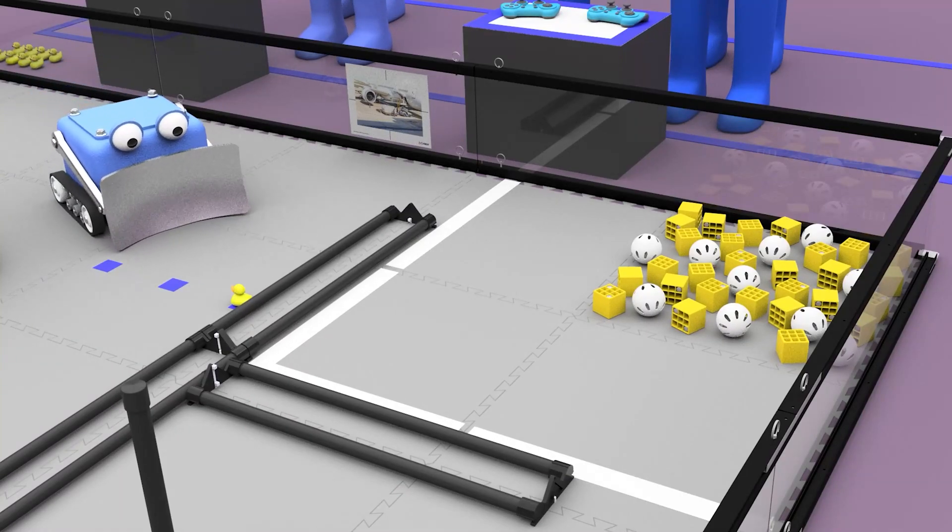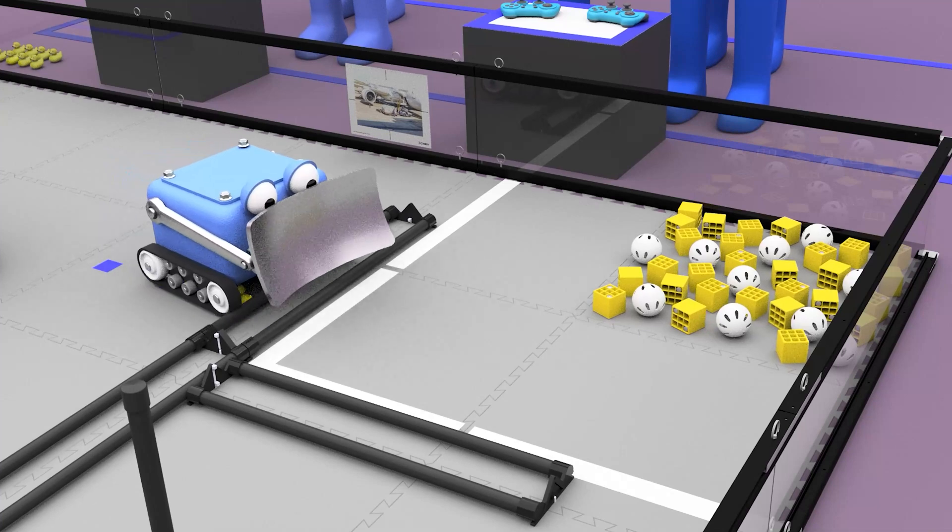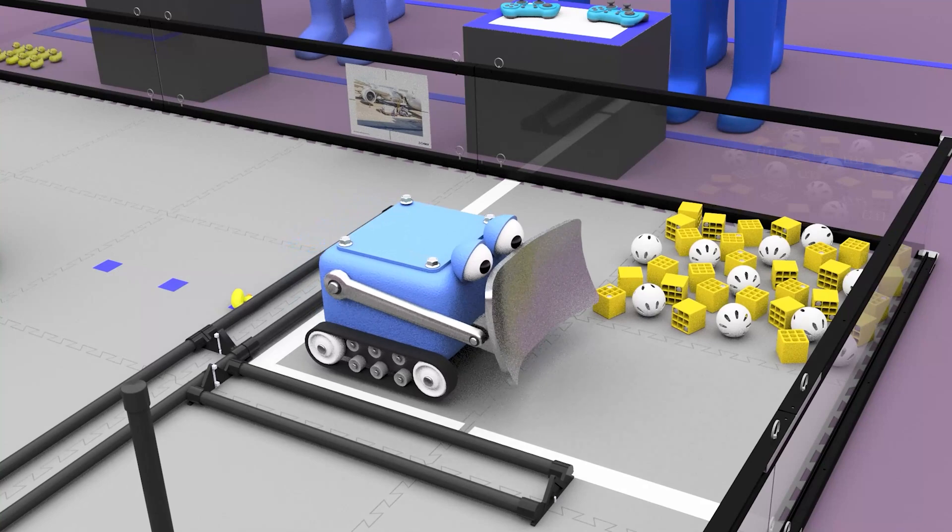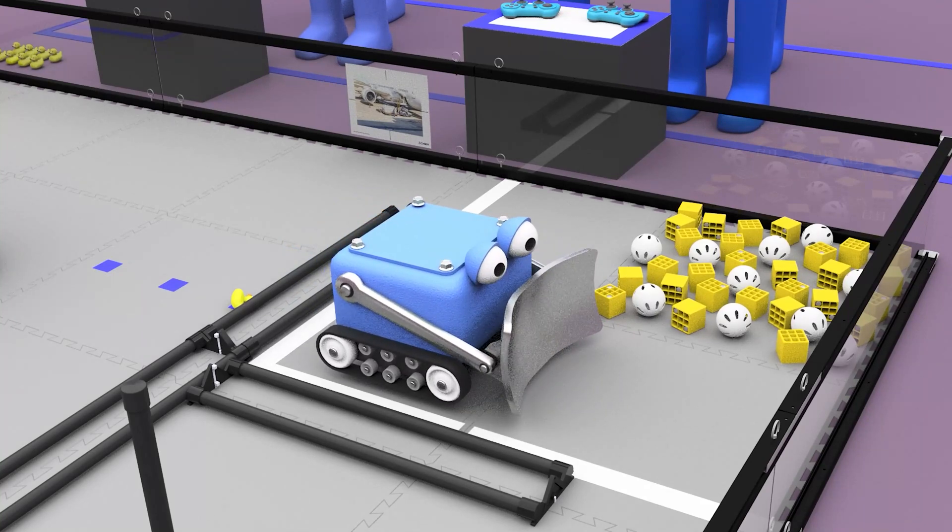A robot parked in the warehouse closest to its alliance station earns five points. If the robot is completely inside the warehouse, it will earn 10 points.